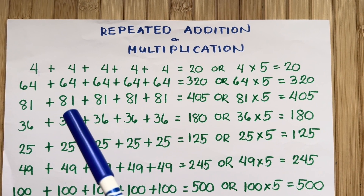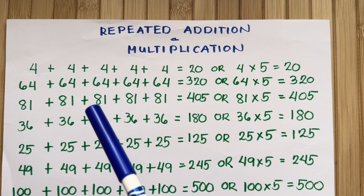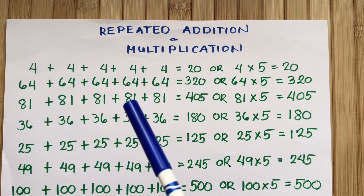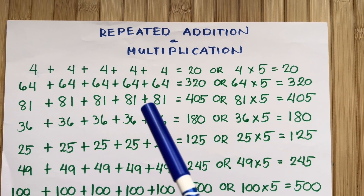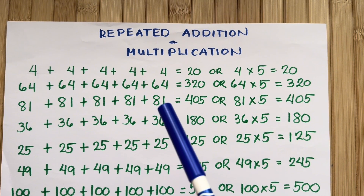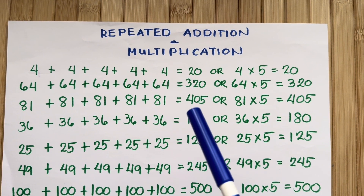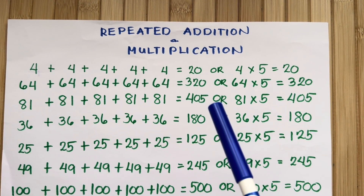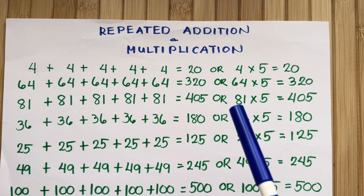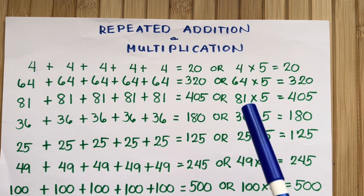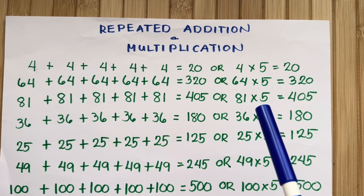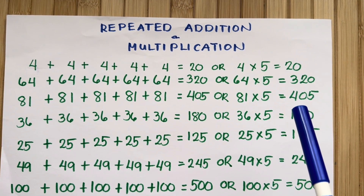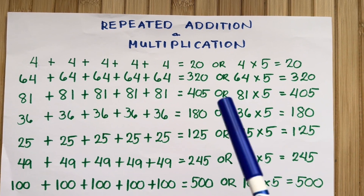81 plus 81 plus 81 plus 81 plus 81 is equals to 405. Or, 81 times 5 is equals to 405.